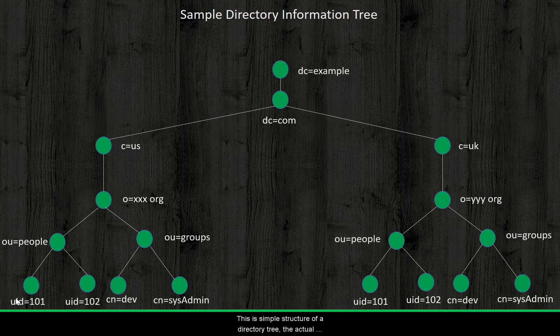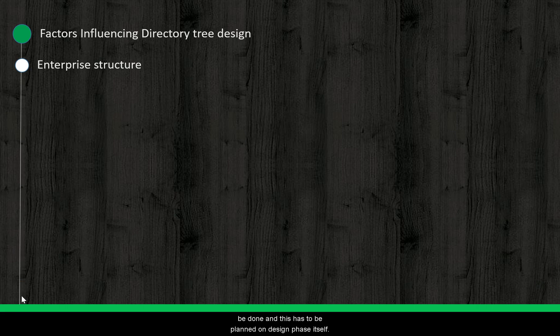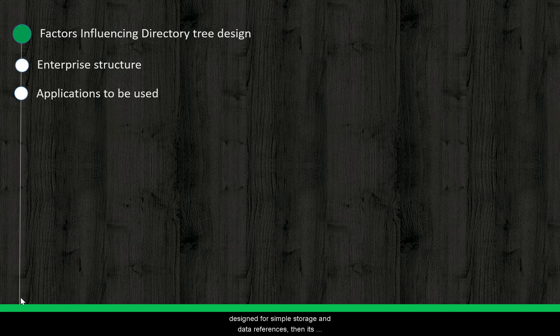This is just a sample structure of a directory tree. The actual design of a directory tree can be influenced by a number of factors. For example, if an enterprise has its presence in more than one geographical location, appropriate branching has to be done, and this has to be planned in the design phase itself. Another example is if a directory structure is designed for simple storage and data references, its design would be different. And if it is used for different applications for authentication, its design would be a different one.